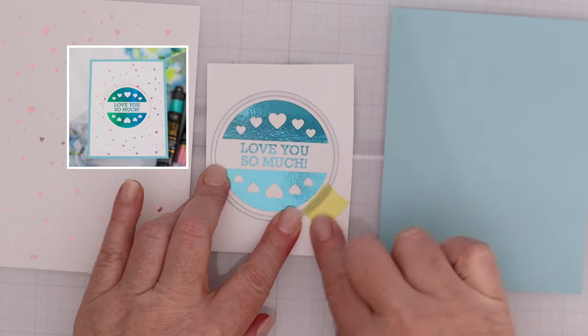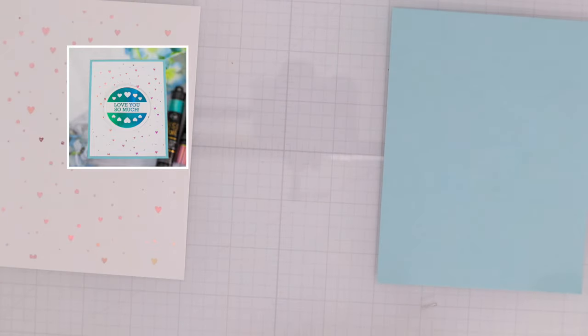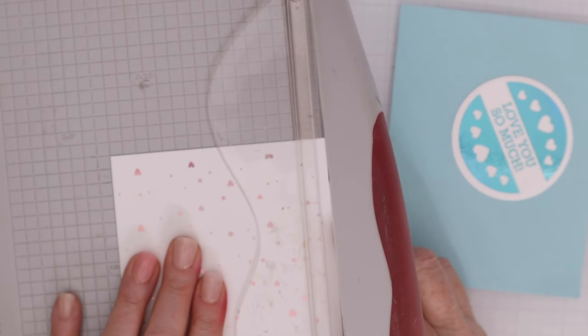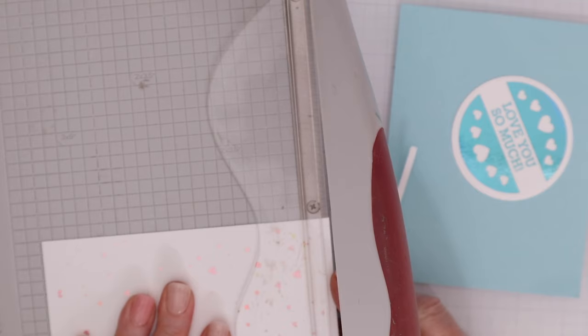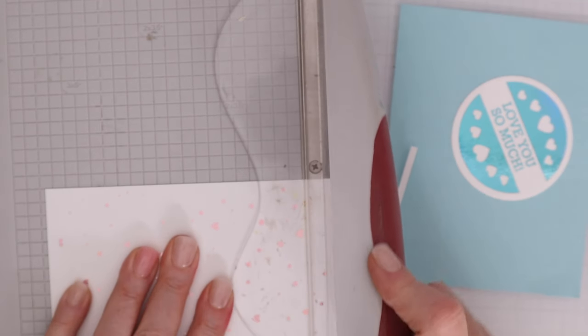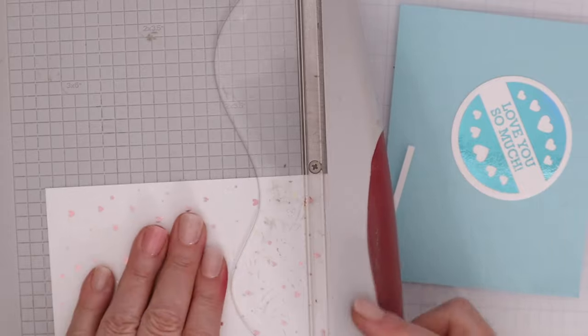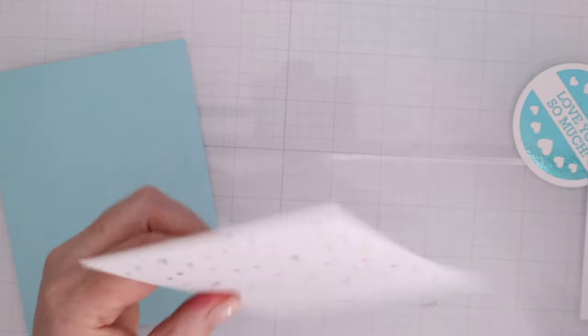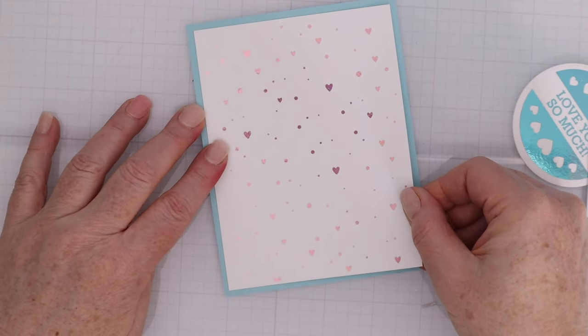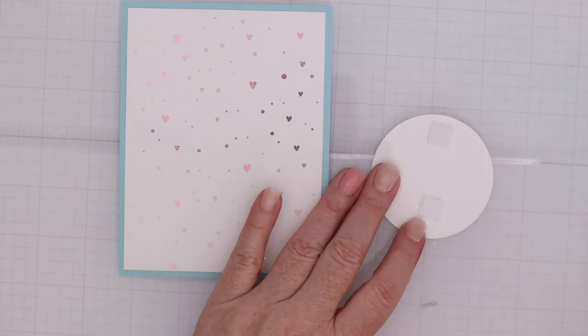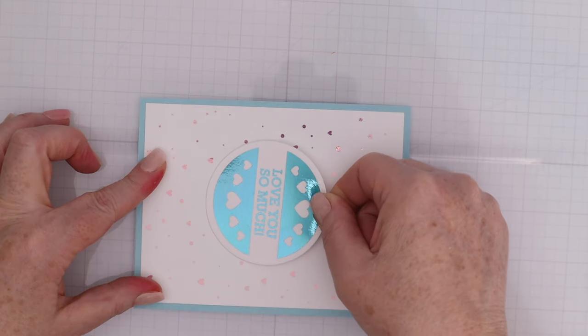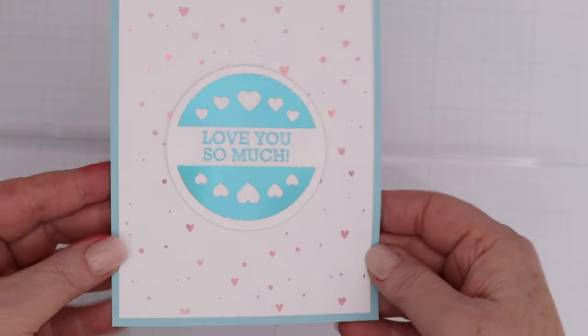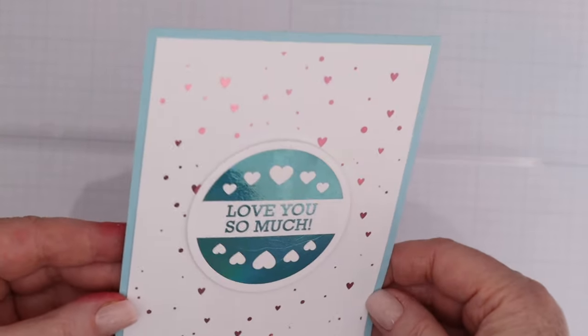Don't forget that you might have dies in your stash that you can use to cut out those foiled elements like that circle die I just used here. Then I'll cut the foil background down to four by five and a quarter so that I can matte it on some Gina K cardstock. I love this sea glass color in ink and I also love it in cardstock. So just a little paper runner on the back of that foil panel place it down on the cardstock and then pop up the foiled sentiment that says love you so much and has a bunch of hearts that I die cut out with a plain old circle die and again this card is done.